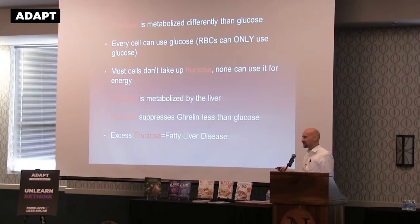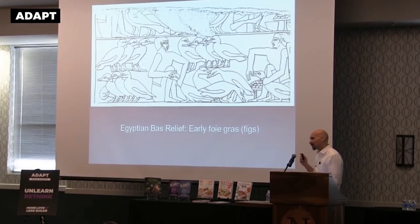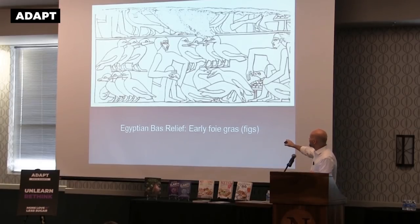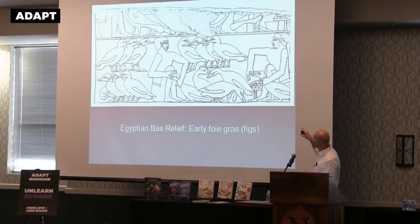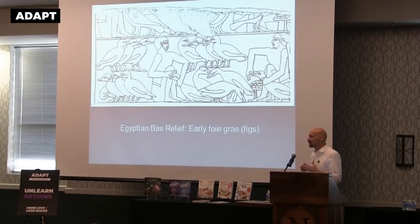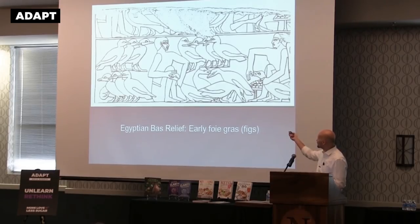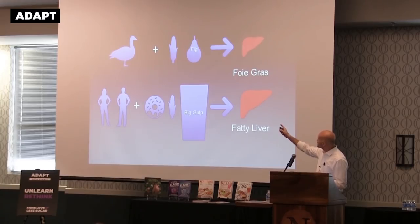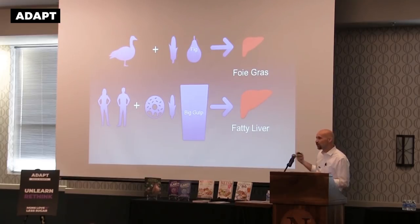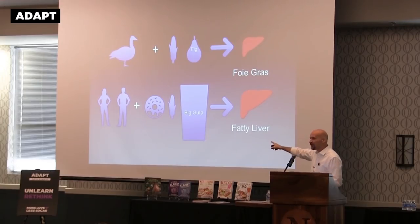Dr. Westman indicated this as well, but the foie gras people have known this for years. Here's a 4,500-year-old piece of art from an Egyptian tomb showing ancient Egyptians stuffing figs into geese to make fatty liver. It's described in Roman, ancient Egyptian, and Greek literature going back thousands of years. They knew how to make fatty liver — this delicacy. They used figs, and modern producers use corn or other grain, and you get fatty liver — foie gras.